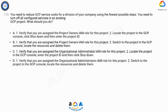C. 1. Verify that you are assigned the organizational administrator IAM role for this project. 2. Locate the project in the GCP console, enter the project ID and then click shut down.